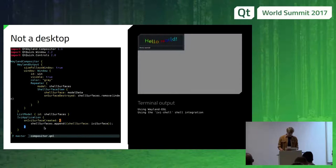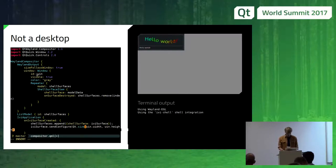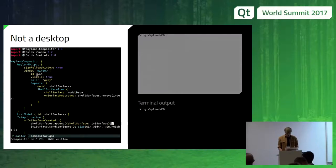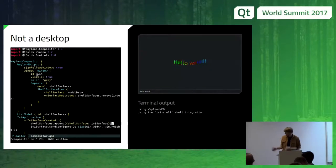What we can do in the surface created signal is call a method called send_configure with a size — we set it to the window size. And hopefully, if we relaunch this example, it scales to fill the full screen.